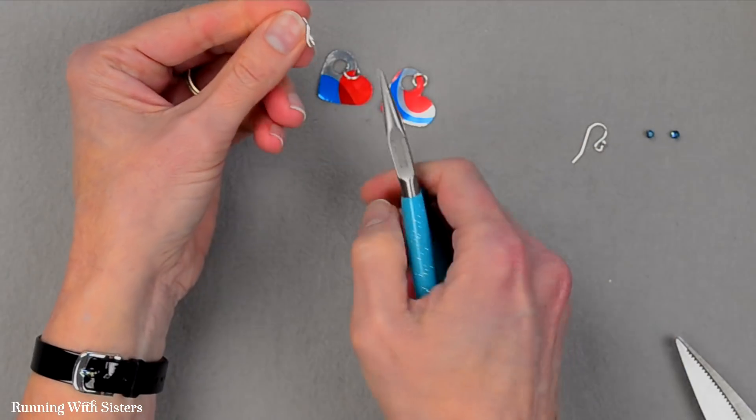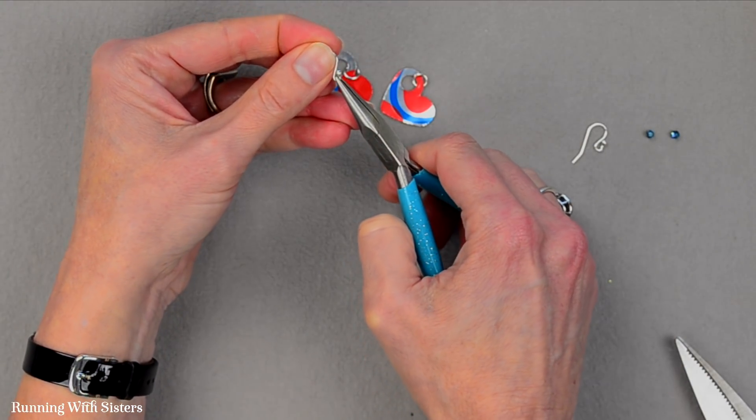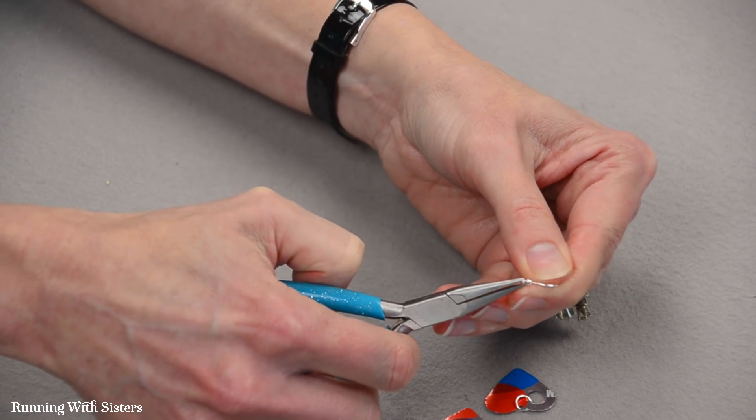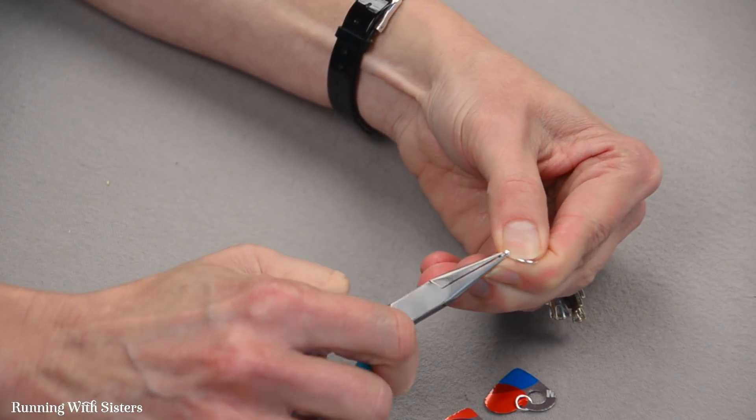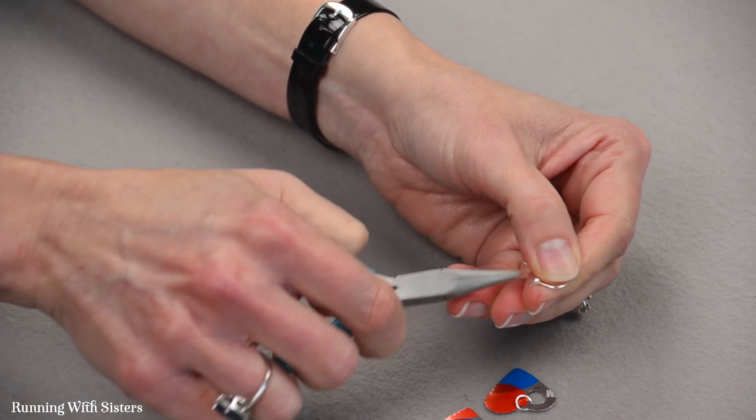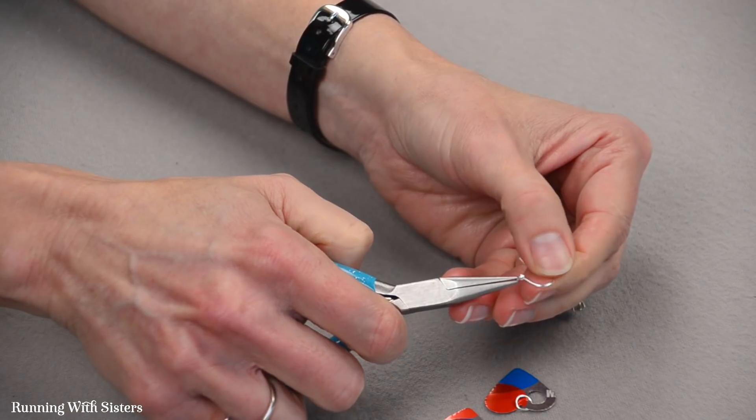And now what I can do is open the loop on my earring wire. And to do that I'm just using chain nose pliers and I'm just going to rotate that loop to the side kind of like I'm opening a door. I don't want to pull it this way because I'll lose the roundness of my loop there.